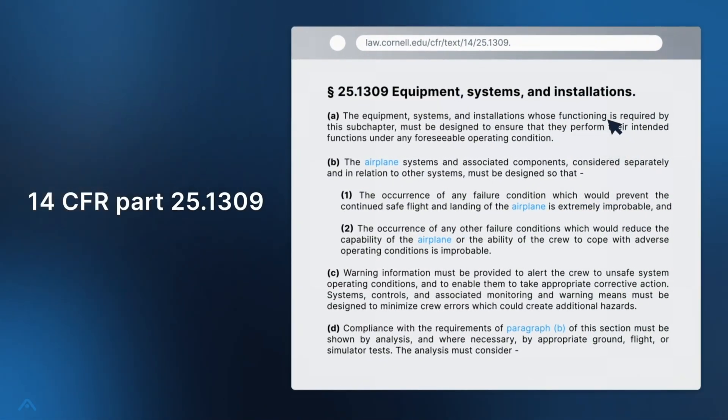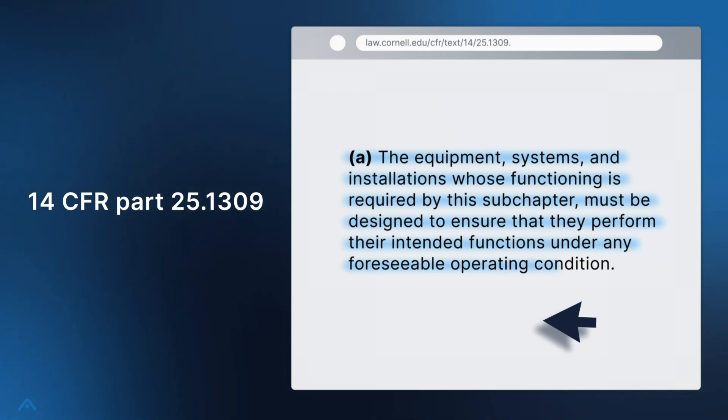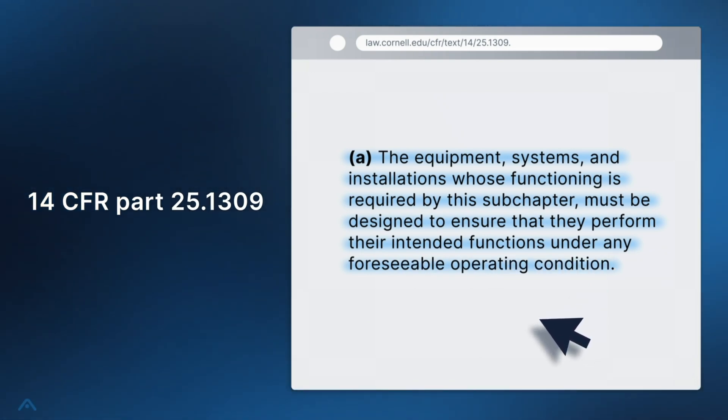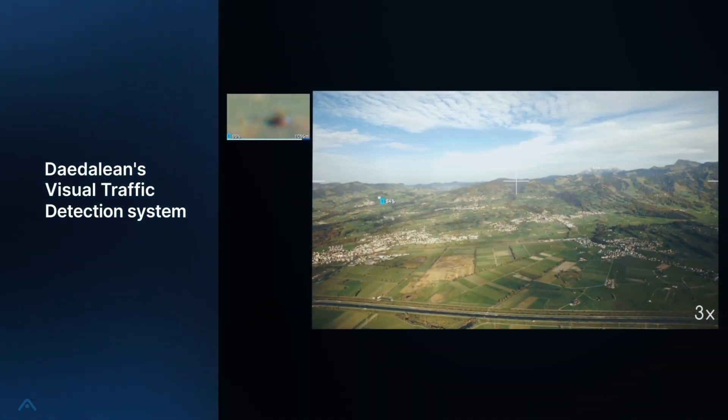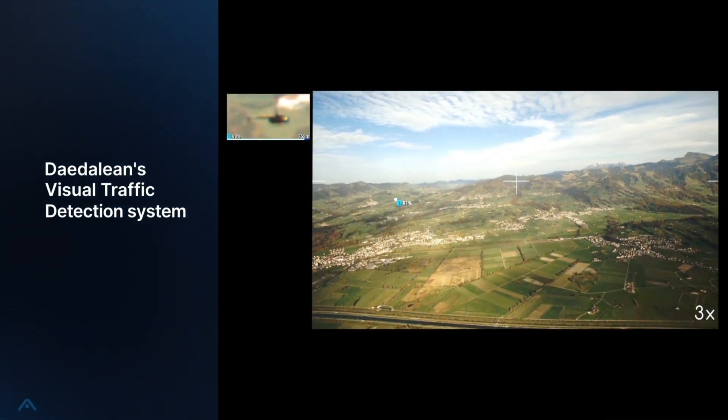Let's remember the requirements for a system as a whole, to be designed to perform its intended functions under any foreseeable operating condition. How can we cope with one component of a system having limited accuracy? By designing the system properly.